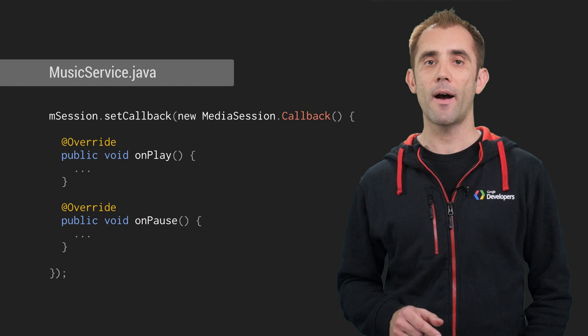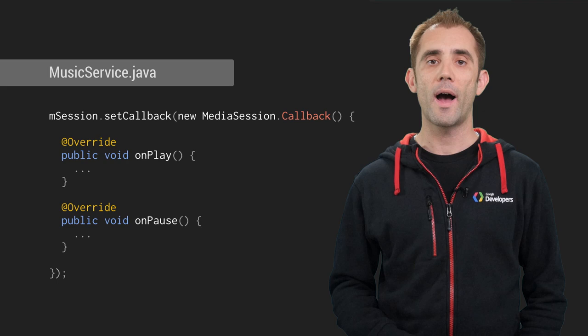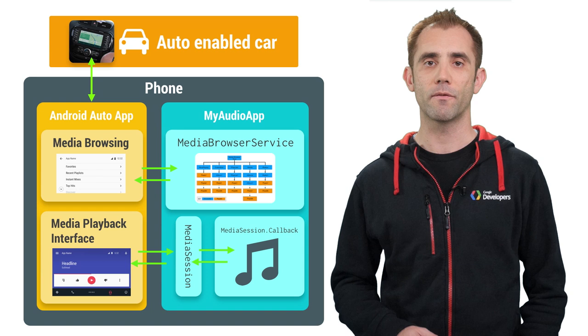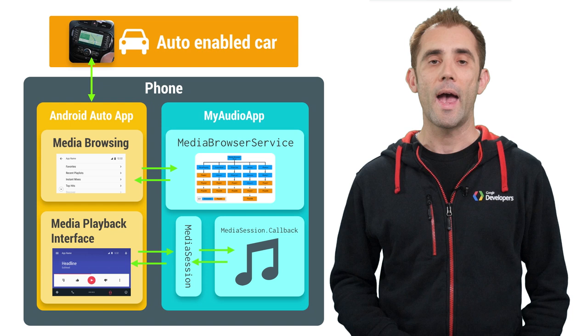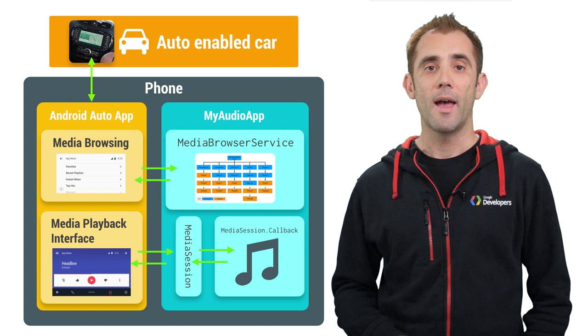With the session token, Android Auto is now able to instantiate a media controller that can remotely control our media session via the media session callback methods. Here's a diagram that shows a bit more about how everything fits together. You can see your media app interacting with the Android Auto app on the phone and how this then appears in the car.